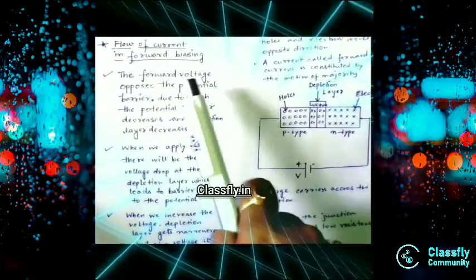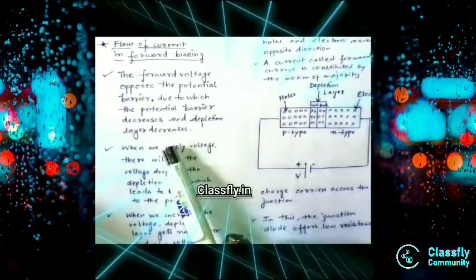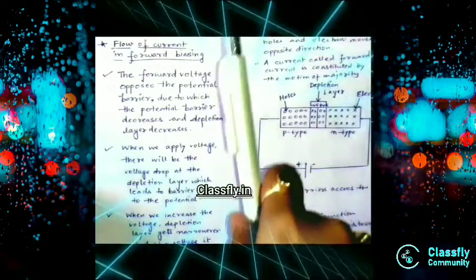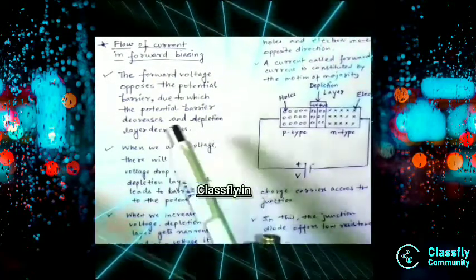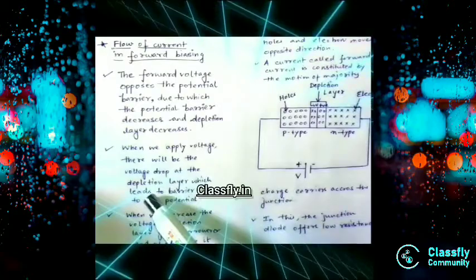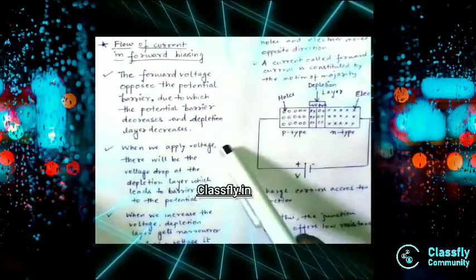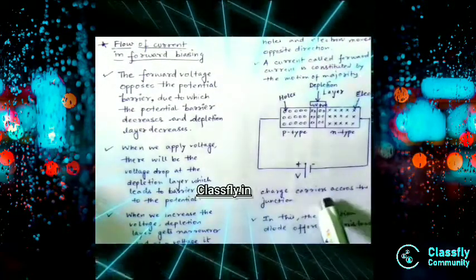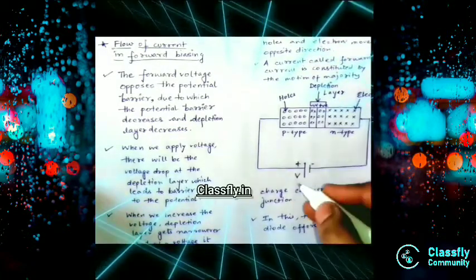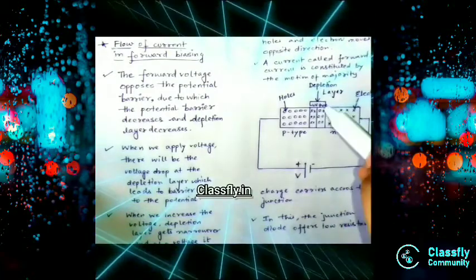The forward voltage opposes the potential barrier, due to which the potential barrier decreases and the depletion layer decreases. When we apply voltage, there will be a voltage drop at the depletion layer, which leads to a barrier to the potential. Basically, whenever we apply voltage V to this forward biased PN junction...